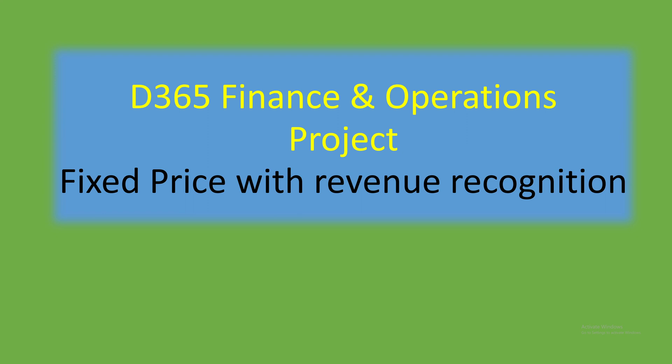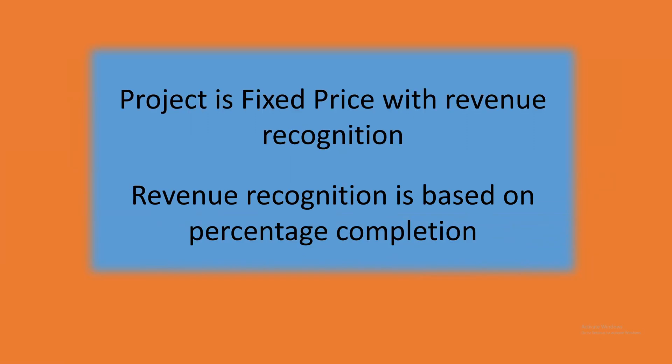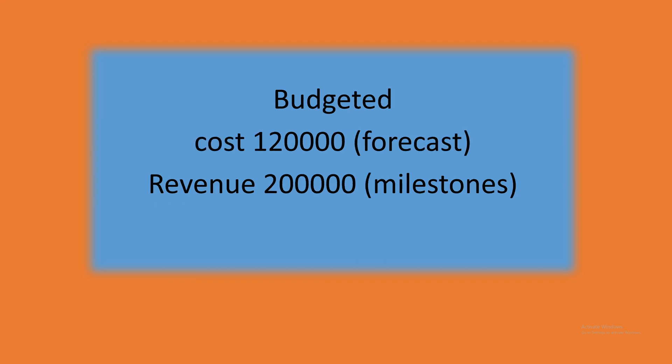Each month, the profit and loss statement needs to reflect how we recognize revenue, even when the milestone invoice may be months away. In this example, we'll use revenue recognition based on percentage completion. The cost budgeted is 120k as part of the forecast model, and the revenue for this fixed-price project is 2 lakhs.